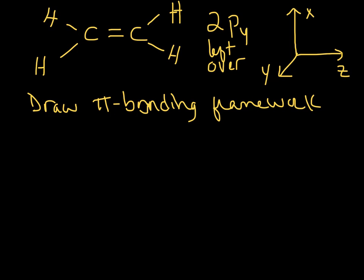So now when we're drawing the pi bonding framework, we get to cheat just a little bit. And what we're going to do is just draw kind of a skeletal structure for the sigma bonding framework, because we have to have something to draw our pi bond onto. So I'm just going to make single bonds, just connect everything together. This represents our sigma bonding framework that we drew on the previous slide.